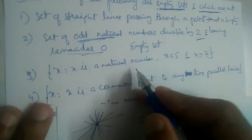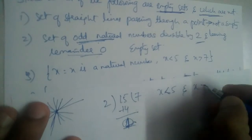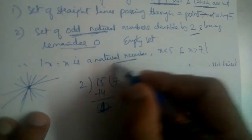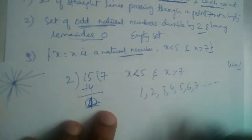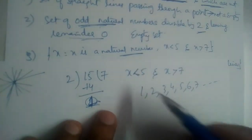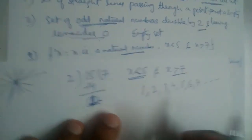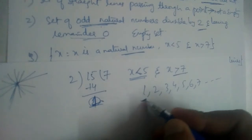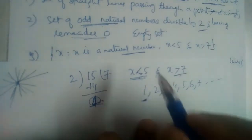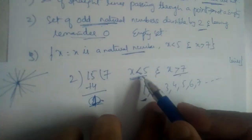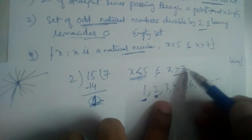Third one: x is a natural number, x should be less than 5 and at the same time x should be greater than 7. Natural numbers start from 1, 2, 3, 4, 5, 6, 7, 8, 9, 10 and so on. The value of x should be less than 5 AND greater than 7 at the same time. If I take 1: is it less than 5? Yes. Is it greater than 7? No. If I take 2: is 2 less than 5? Yes. Is 2 greater than 7? No — both conditions must satisfy.